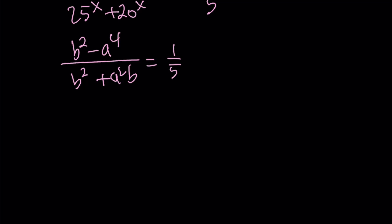Great. Now we can go ahead and do some factoring. The top kind of reminds me of the difference of two squares, x squared minus y squared. Remember, that can be factored into x plus y, x minus y. So we can write this as b plus a squared times b minus a squared.